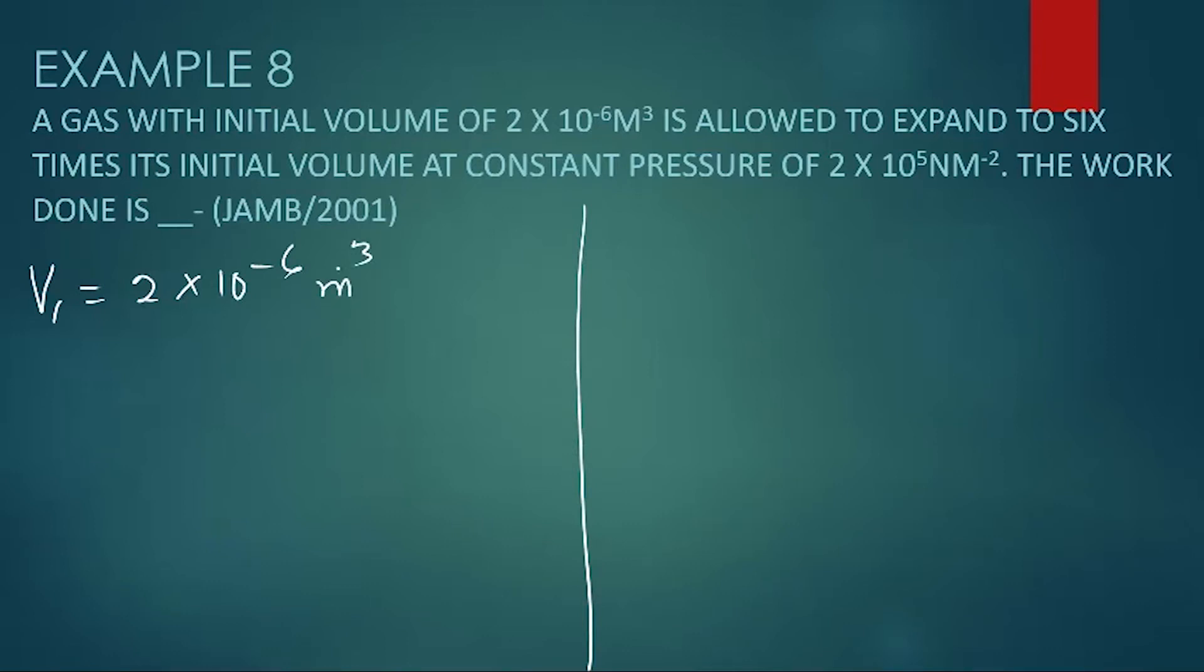It is allowed to expand to 6 times its original volume. V2 will now give you 6 times 2 times 10 raised to the power of minus 6 because the rate of expansion is 6 times the initial volume. And that gives you 1.2 times 10 raised to the power of minus 5 meters cubed.